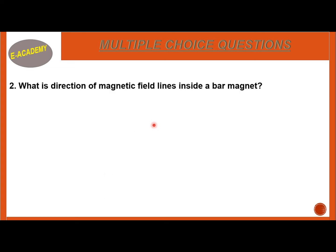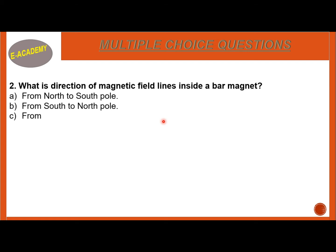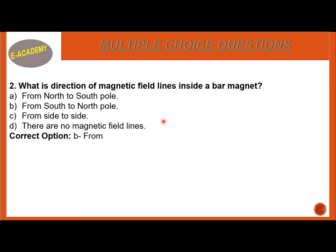Question 2: What is the direction of magnetic field lines inside a bar magnet? Options: from north to south, from south to north, from side to side, or there are no magnetic field lines. The correct option is B — from south to north. The direction of magnetic field lines inside a bar magnet is from south to north pole.